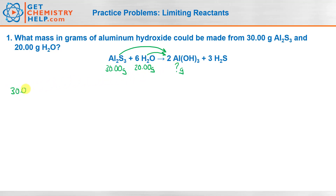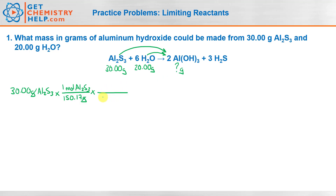For the first one, we've got 30.00 grams of aluminum sulfide. Whenever we have mass, we need to convert that into moles, because moles is the way that we can connect different reagents in a chemical reaction. So we'll turn that into moles using the molar mass — add up two aluminums and three sulfurs and you'll find a mass of 150.17 grams per mole of aluminum sulfide. Now we're in moles of aluminum sulfide, and we want moles of aluminum hydroxide, so we use the mole-to-mole ratio: for every one mole of aluminum sulfide, we produce two moles of aluminum hydroxide.